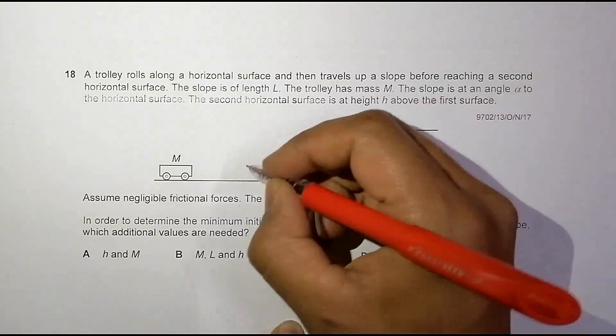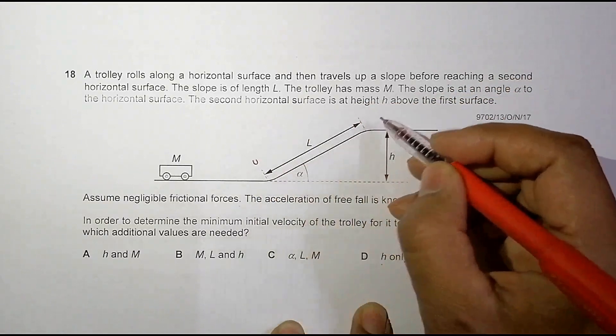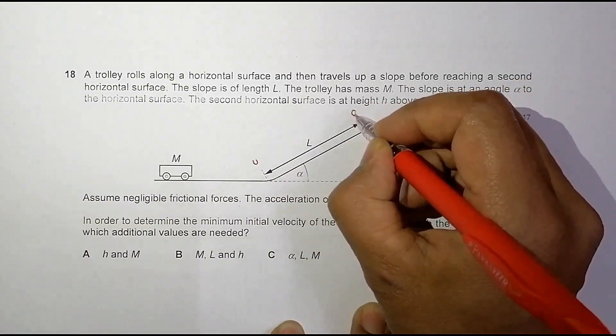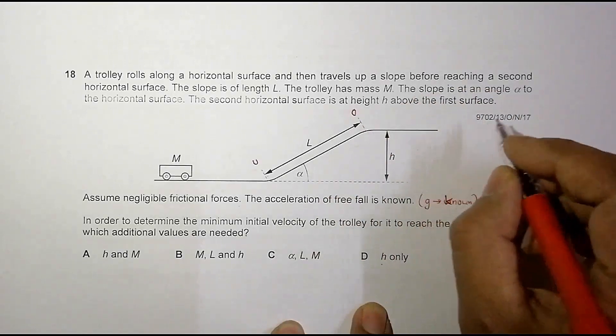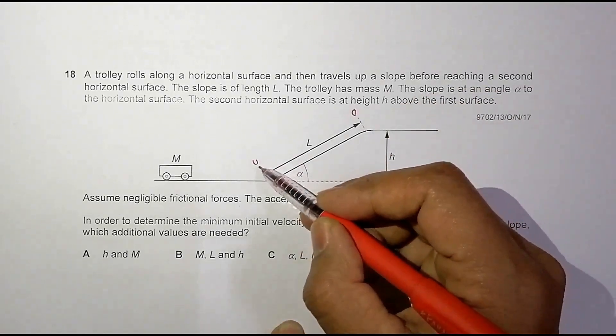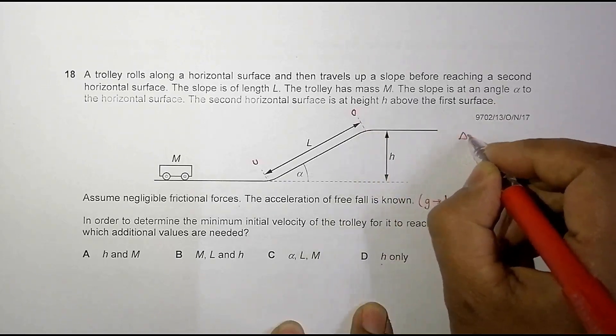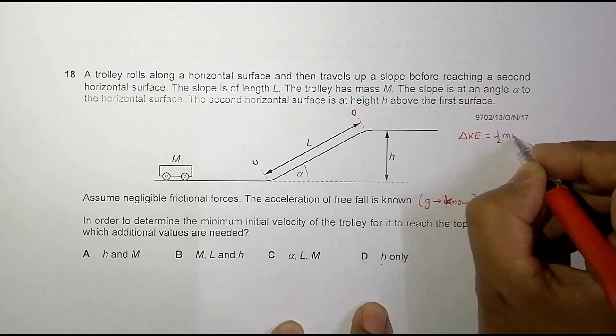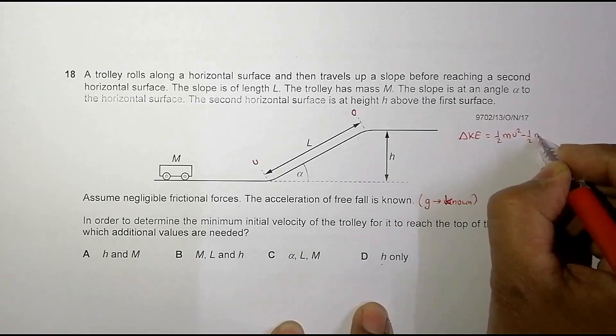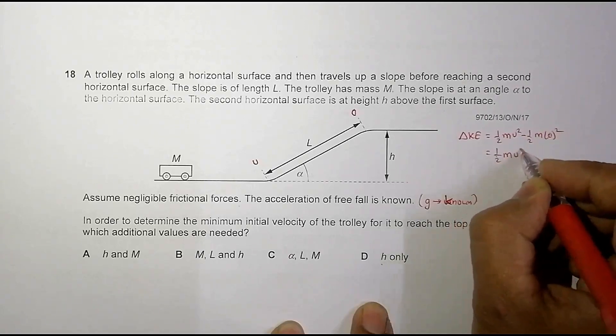If the velocity here is U and it has to just reach the top, the velocity there should be zero. The kinetic energy here is half MU squared and the kinetic energy there is half M zero squared. So delta kinetic energy equals 1/2 MU squared minus 1/2 M zero squared, which equals 1/2 MU squared.